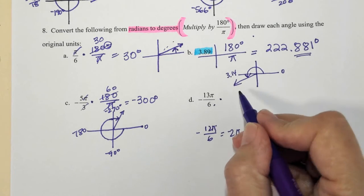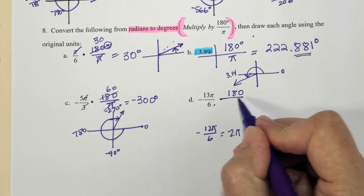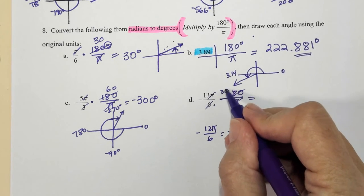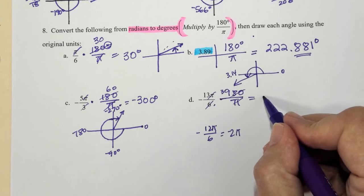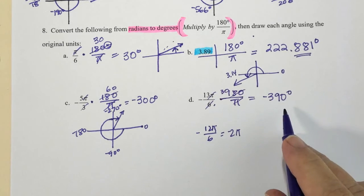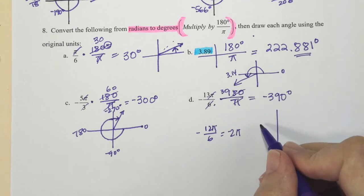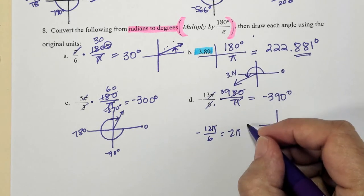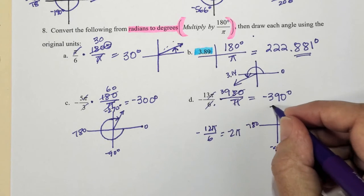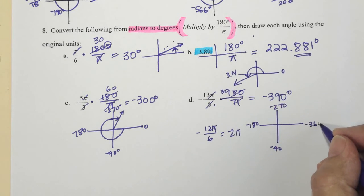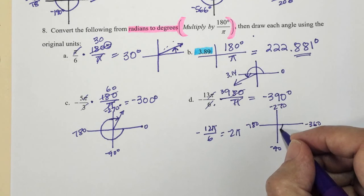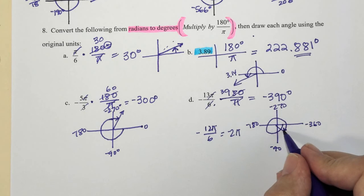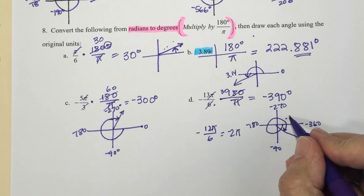Just doing the math on it, and I get negative 390 degrees. Well, 360 is a full rotation, so this is going to be, here's my negative 90, negative 180, negative 270, negative 360 when I go all the way around. So here, and then I need 30 more degrees to make that negative 390.